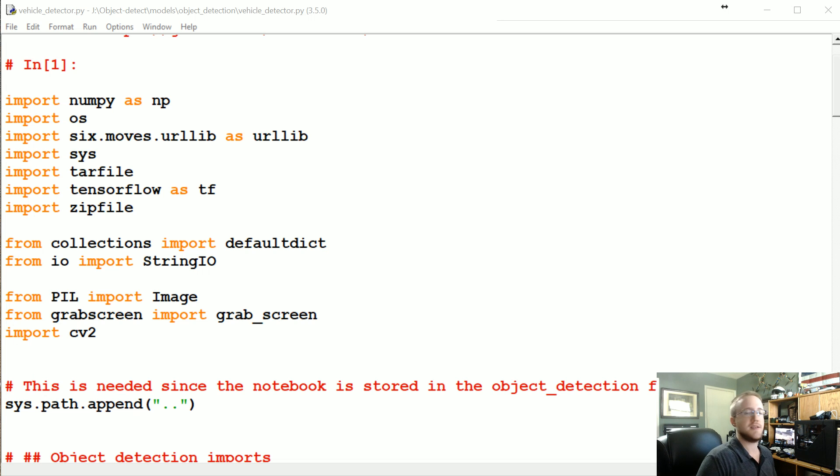We want to use the object detection API to find a vehicle and steal the vehicle. We'll find the vehicle and then the stealing vehicle we don't really need the object API for that. So anyways, let's go ahead and get into it.